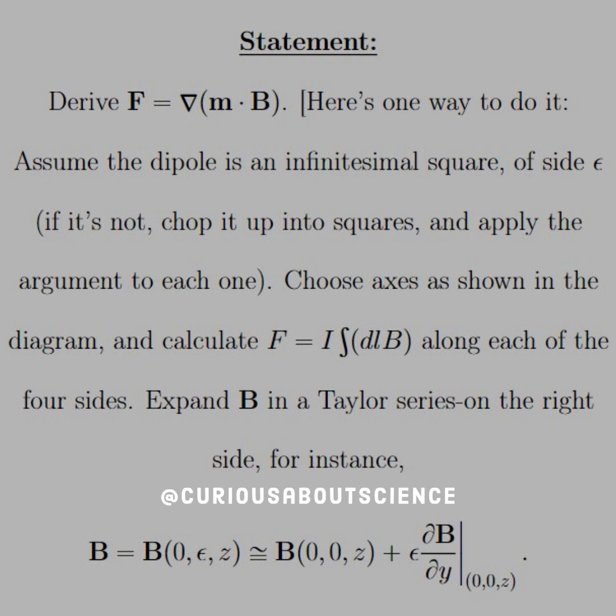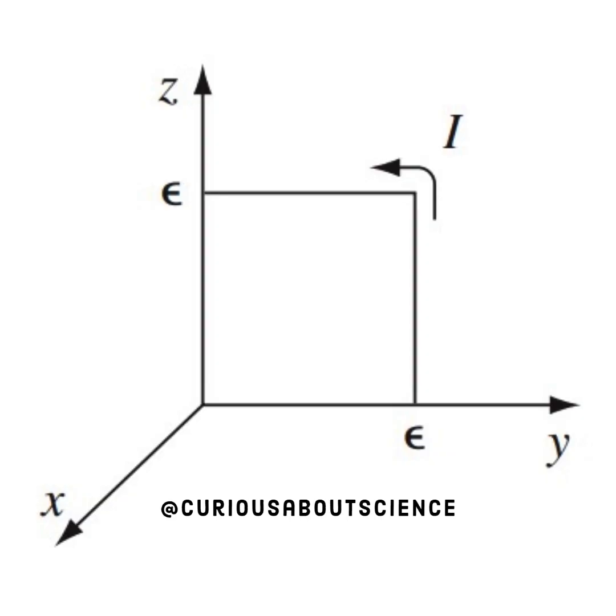For instance, B equals B(0,ε,z) is approximately equal to B(0,0,z) plus ε ∂B/∂y evaluated at (0,0,z), something to that nature. Alright, let's look at the diagram.